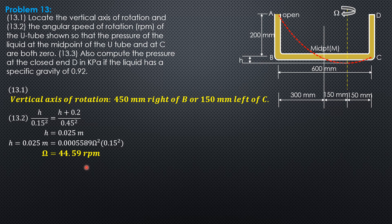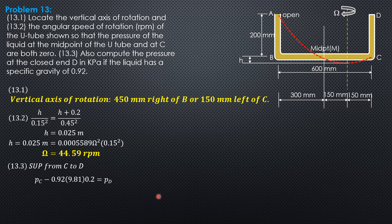Finally, for the pressure at D at the closed end, knowing the pressure at C is zero, we sum up pressure from C to D. Pressure at C minus the specific weight of the liquid (0.92 × 9.81) times 0.2 m equals pressure at D. Since pressure at C is zero, pressure at D is negative 1.805 kilopascals.